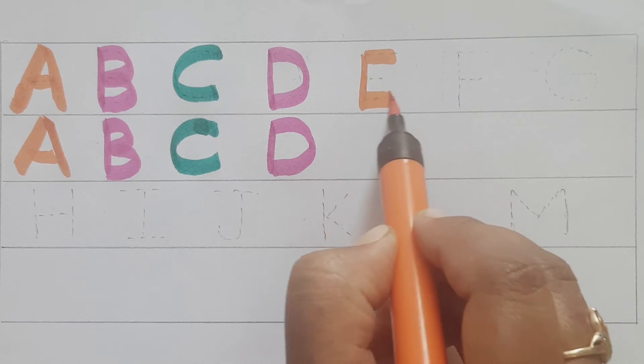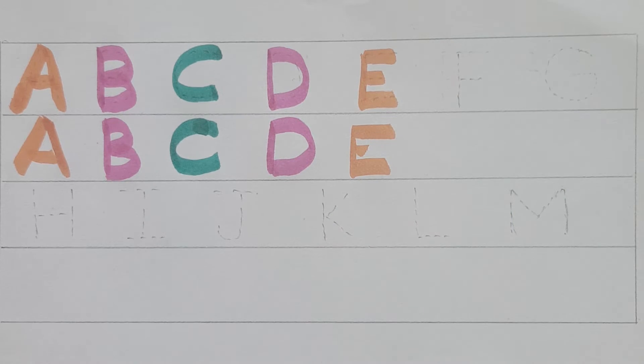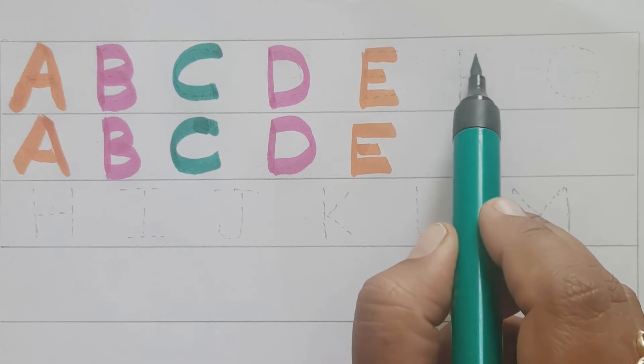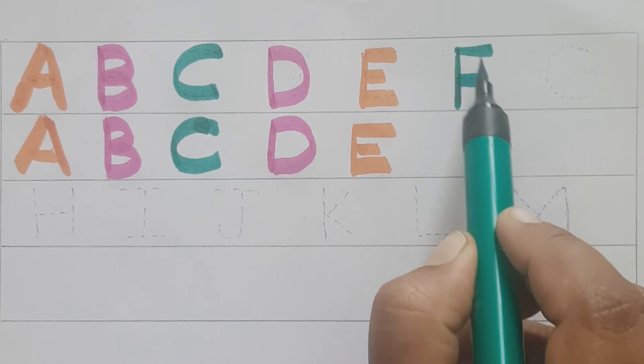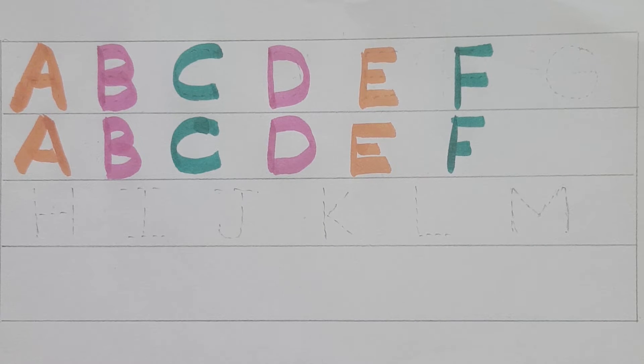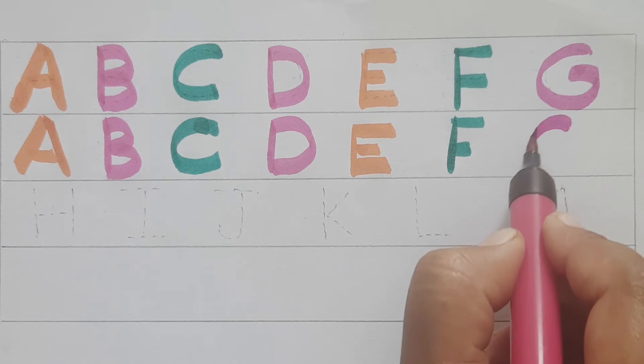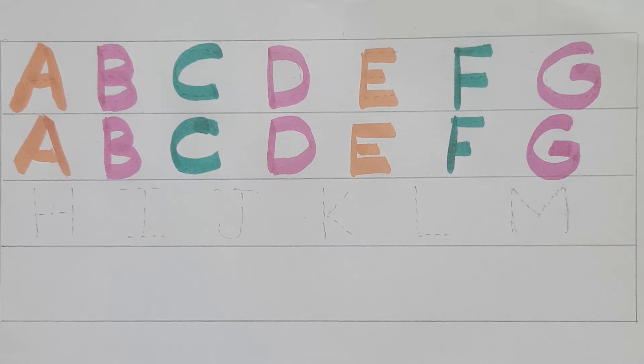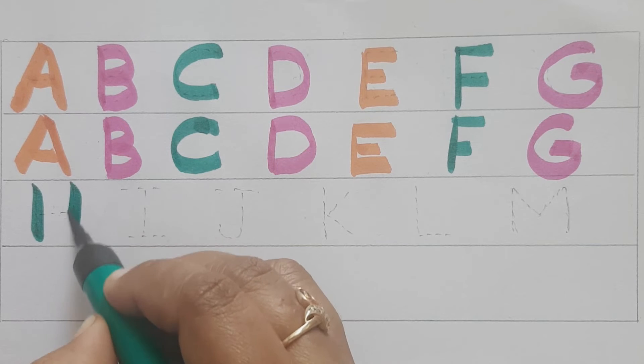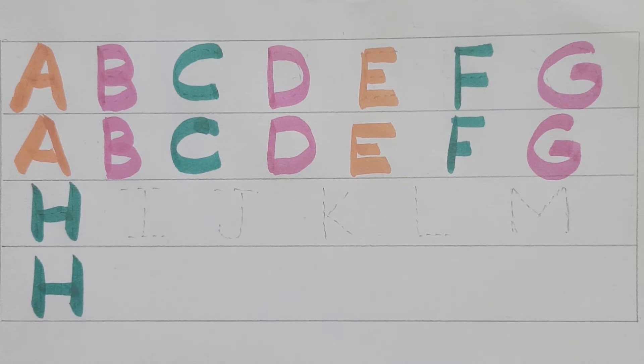E. E for Egg. E for Elephant. E. F. F for Fish. F for Fan. F. G. G for Grass. G for Girl. G. H. H for Hand. H for Hat. H.